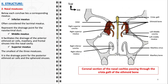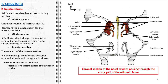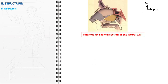The boundaries of the superior meatus are defined medially by the lateral surface of the superior concha and laterally by the medial surface of the ethmoid bone. Each of these meatuses contributes significantly to the nasal cavity's functionality. The nasal cavity is characterized by two primary sets of apertures: the anterior nasal aperture, commonly known as the external nares, and the posterior nasal aperture, known as the choanae, each serving distinct functions.